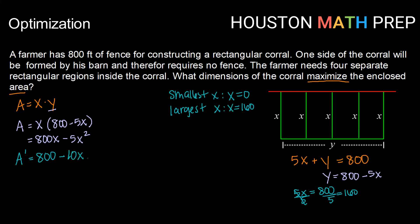Critical points can come from where our derivative is either zero or undefined. Our derivative here is linear, so it will not be undefined. But if we set it equal to zero and solve, we get 800 equals 10x, dividing both sides by 10, we get x equals 80 as a critical point.